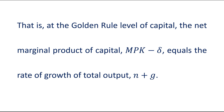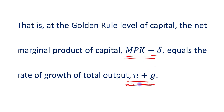So steady-state consumption is maximized when MPK minus delta equals n plus g. At the golden rule level of capital, the net marginal product of capital — that is, marginal product of capital minus the depreciation rate delta — equals the rate of growth of total output, which is n plus g.